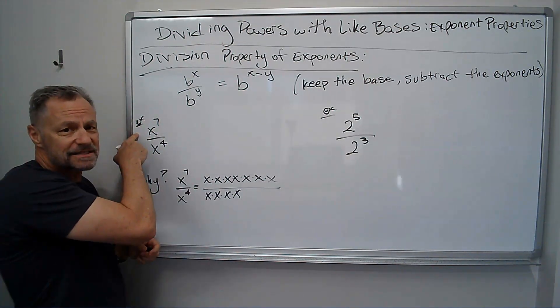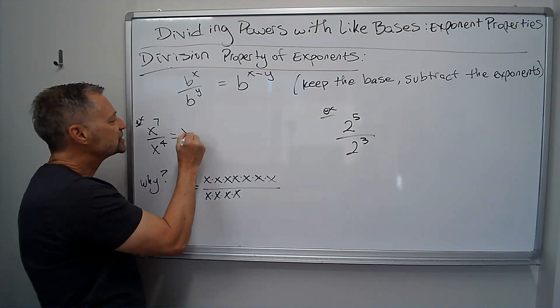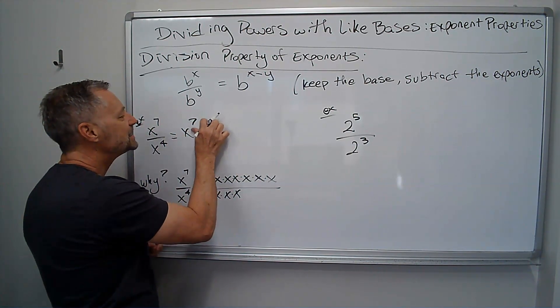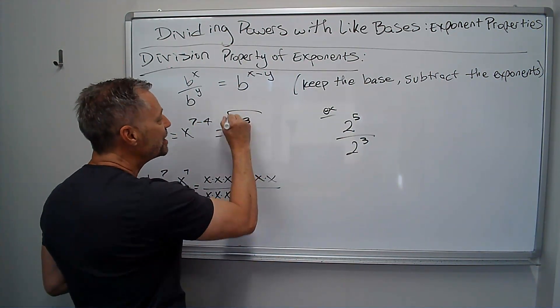So for instance, x to the 7th divided by x to the 4th, it's just x to the 7th minus 4, which is x to the 3rd, and I'm done.